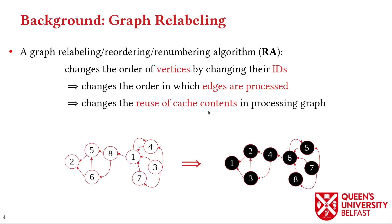A reordering algorithm assigns new IDs to the vertices of a graph, which changes the order in which edges are processed and memory accesses are performed. This finally changes the reuse of cache contents.